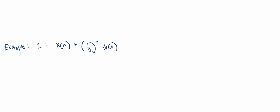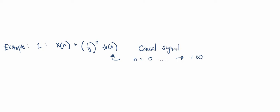As you can see, we have (1/2)^n times u(n). By identifying this, it is a causal signal, meaning n should be equal to zero up to positive infinity.